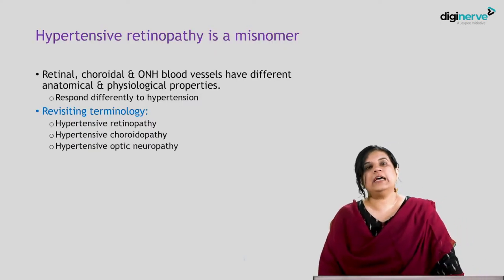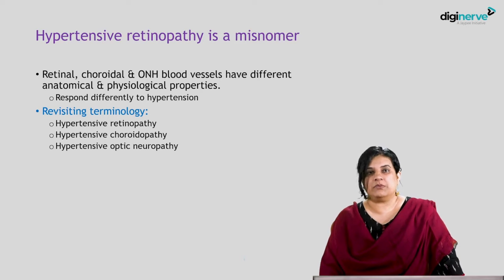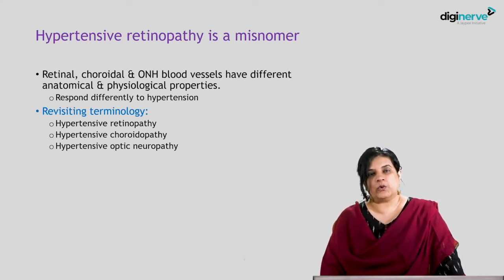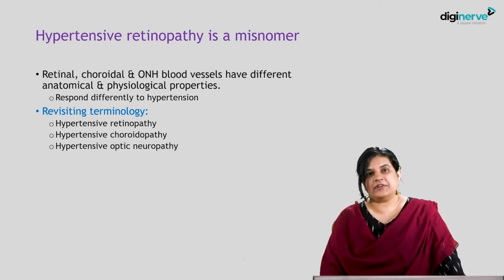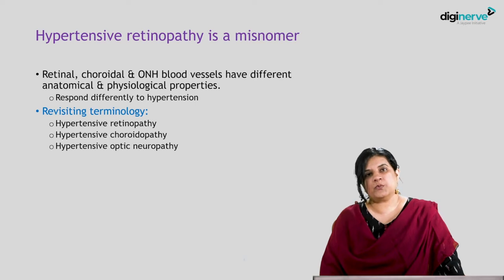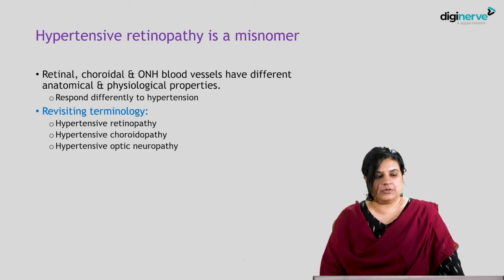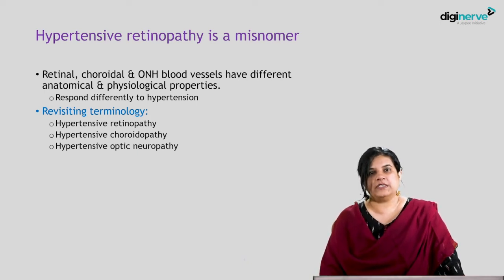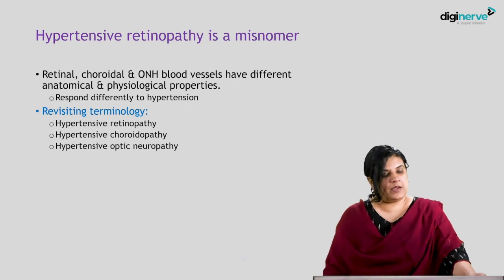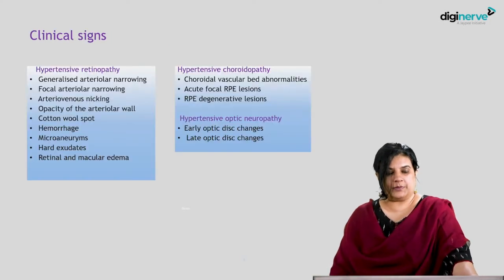The word 'hypertensive retinopathy' is actually a misnomer. The retinal, choroidal, and optic nerve head blood vessels have different anatomical and physiological properties and they respond differently to hypertension. So it would be more accurate to say hypertensive retinopathy, hypertensive choroidopathy, and hypertensive optic neuropathy.